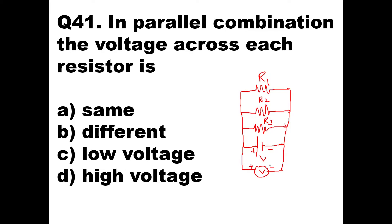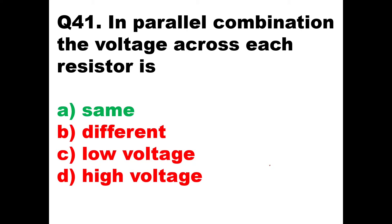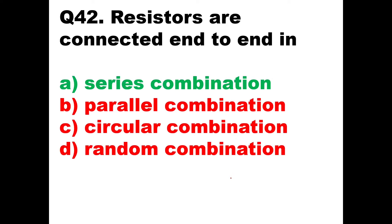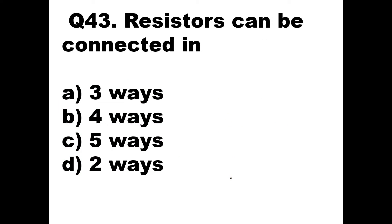So across each resistor the voltage remains the same in a parallel combination. The option should be A — same. Then question 42: Resistors are connected end to end in which combination? When you connect resistors from end to end — R1, then R2 from that end, then R3 — it is called a series combination. Option A is correct.